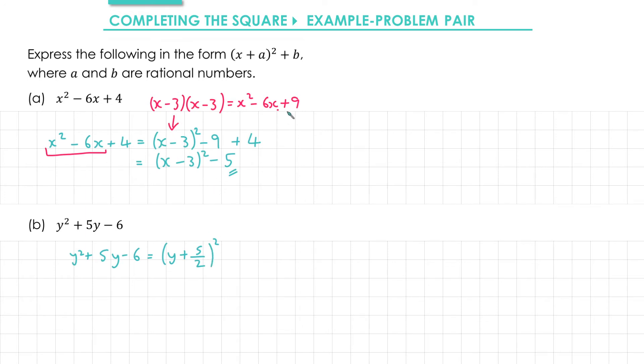Recall in the last example we had an extra plus 9. This time if we squared the second term we'd get 25 over 4. But remember we don't want that bit so we're going to subtract it. And then at the end we've got minus 6.